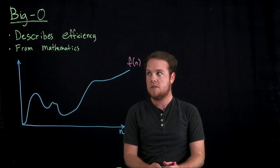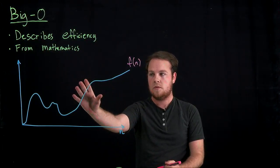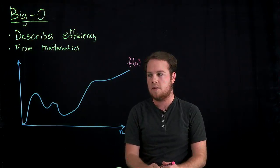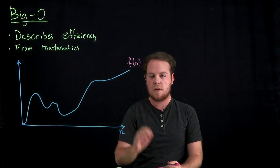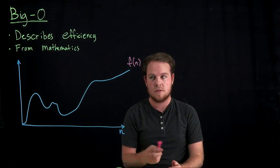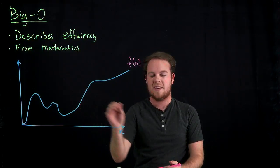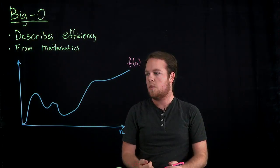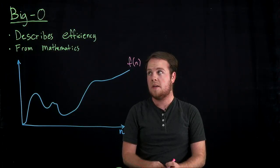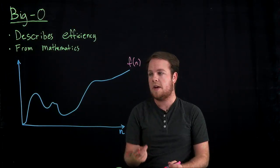Big O notation is a way to describe this in more general terms than the function itself. Because oftentimes when we're analyzing algorithms, the function is too hard to calculate exactly.